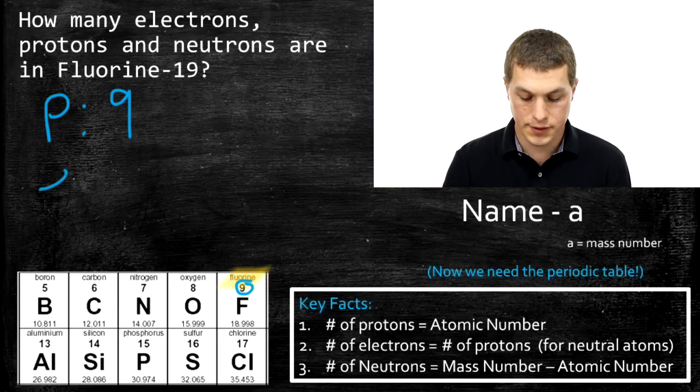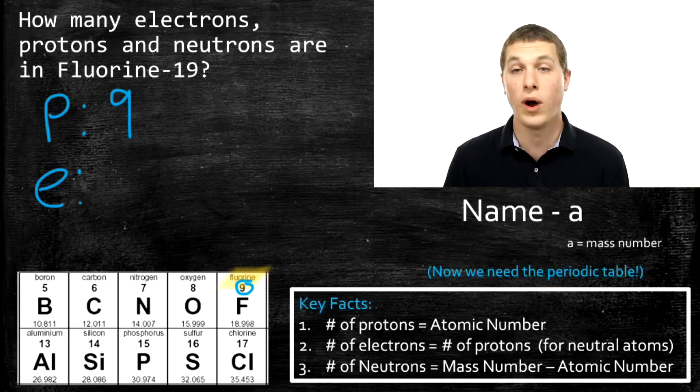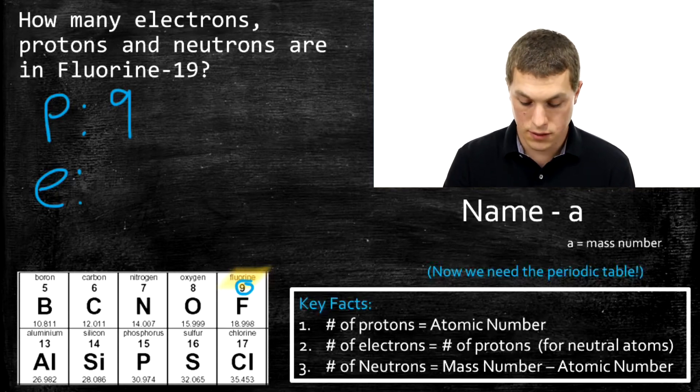Okay, next, how many electrons does this guy have? Well, it's neutral, so it has to have the same number of protons and electrons, so it's 9.